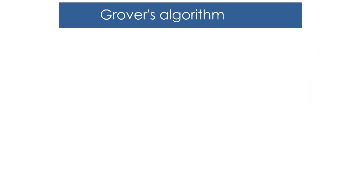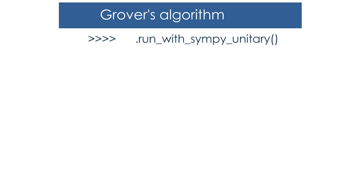Now we'll be able to see the circuit one by one. We can check the unitary matrix of the circuit by running it with sympy unitary. It usually starts from the diagonal matrix of the CZ gate first. The marking is on 1 1.